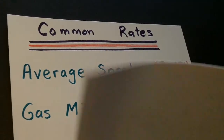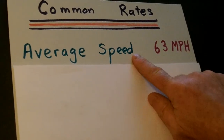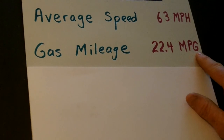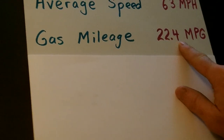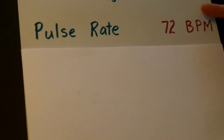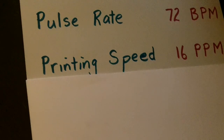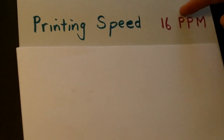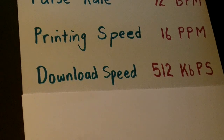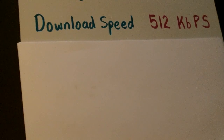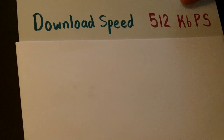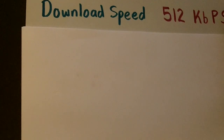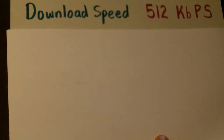Here are some common rates: average vehicle speed is miles per hour; gas mileage is miles per gallon — some cars travel 22.4 miles per gallon; pulse rate is measured in beats per minute; printer speed is pages per minute, such as 16 pages per minute; and download speed from the internet can be measured in kilobytes per second, for example 512 kilobytes per second.